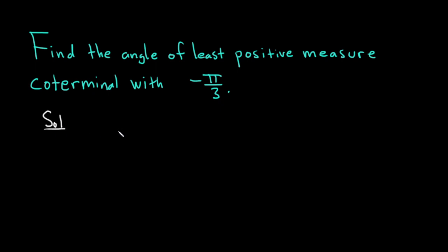So an angle is coterminal with another angle if it differs by a multiple of 2 pi. If you're dealing with degrees, instead you use 360 degrees.